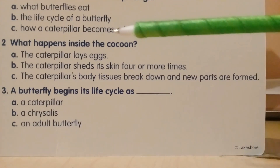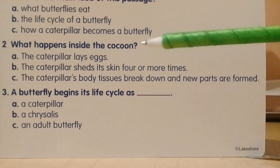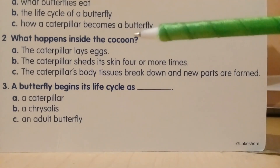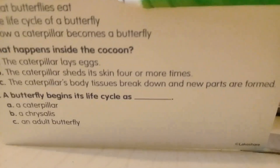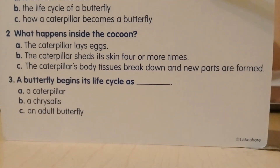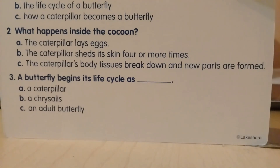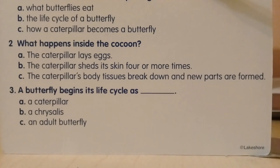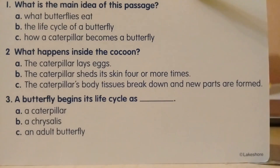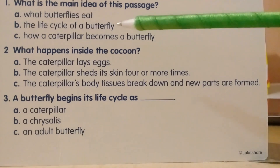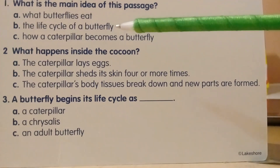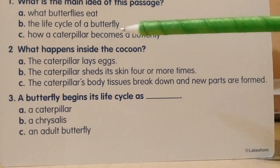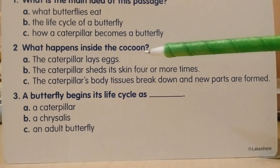I would say C is a little bit too narrow. The text goes into even more detail than just how a caterpillar becomes a butterfly — it's talking about the entire life of a butterfly, right from being a caterpillar to becoming a butterfly and then laying eggs with the cycle starting again. I feel like that word 'cycle' is very important, so in this case I would pick B — the life cycle of a butterfly. Seeing the word 'cycle' in the text is the biggest clue for me.